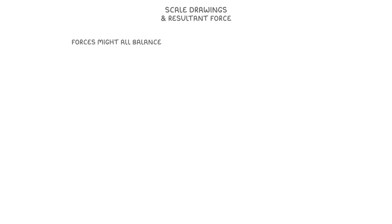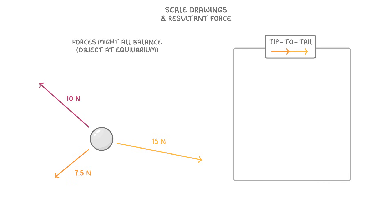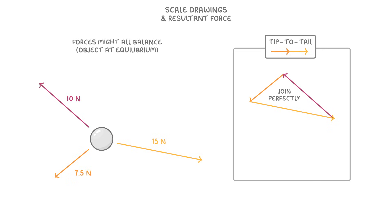In some cases, the forces might all balance, in which case the object will be at equilibrium. For example, if we had a particle that had these three forces acting on it, then to find the overall force, we just arrange the three arrows tip to tail like before. And because they all join up perfectly like this, it means there must be zero resultant force.